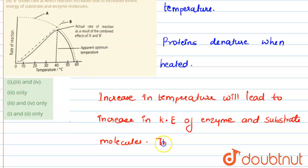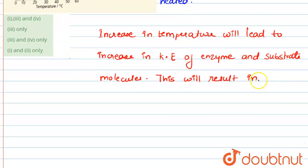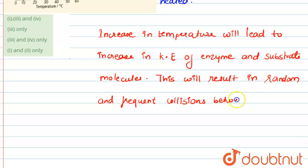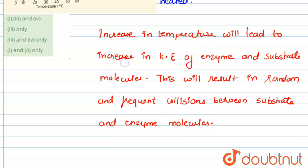This increase in kinetic energy will result in random and frequent collisions between the enzyme and substrate molecules, leading to rapid movement and frequent collisions. This will increase the rate of reaction.